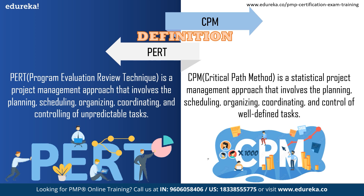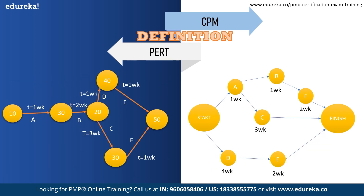If we look at this diagram, CPM models the activities and events of the project as a network. Here, activities are depicted as nodes on the network, and the events that signify the beginning and ending of the activities are depicted by arcs and lines between the nodes.